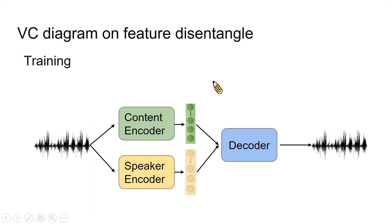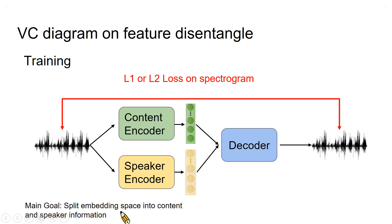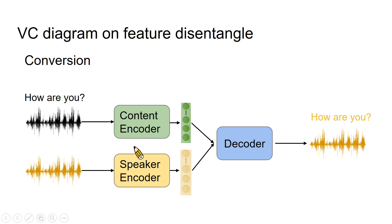We will focus on the feature disentanglement-based method. Because of the absence of paired data, feature disentanglement-based voice conversion can be seen as a variant of autoencoder. The loss function minimizes the spatial distance between input and output. Our main target is not to reconstruct the original signal, but to split the embedding space into content and speaker information. If the content encoder and speaker encoder are well trained, we just replace the input to the speaker encoder as our target, then the voice conversion is fulfilled.